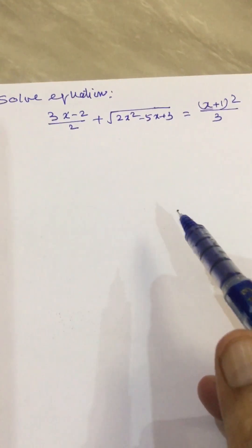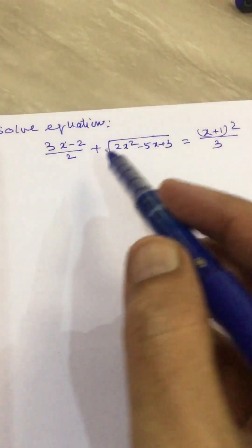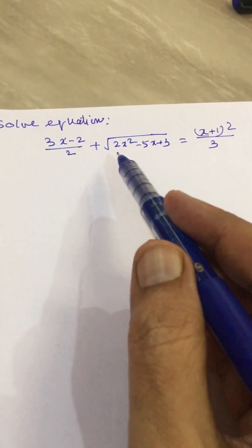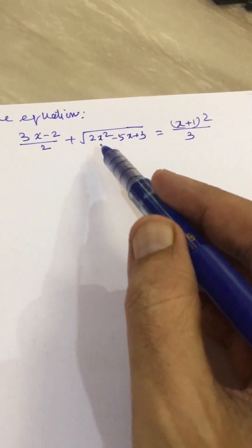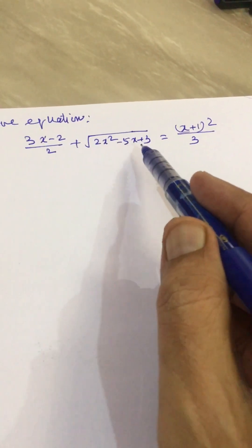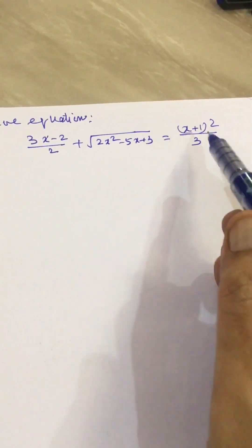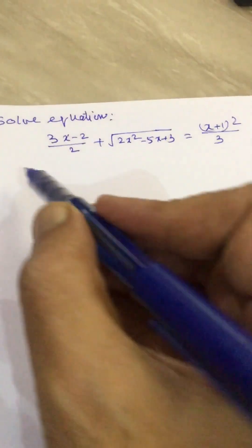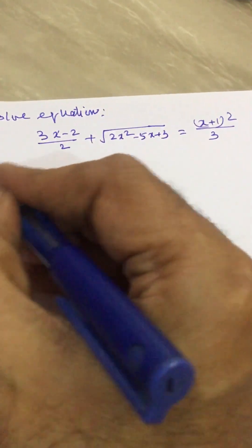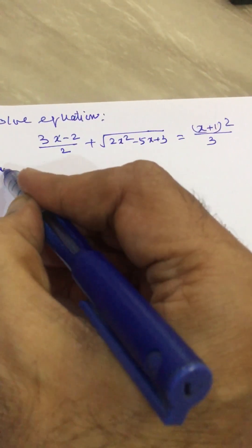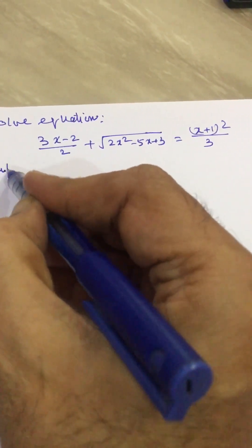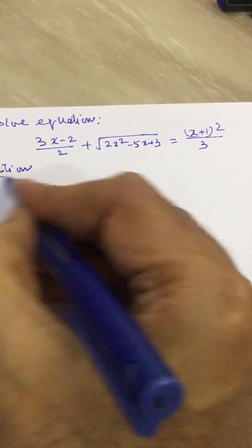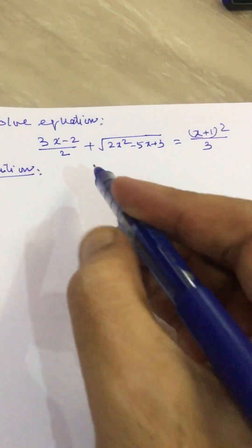Dear friends, in this video we will solve the equation: 3x minus 2 divided by 2, plus the square root of 2x squared minus 5x plus 3, equal to x plus 1 squared divided by 3. We will solve this problem as follows.